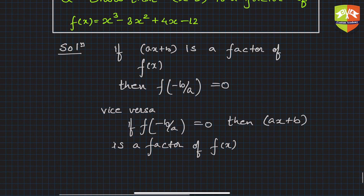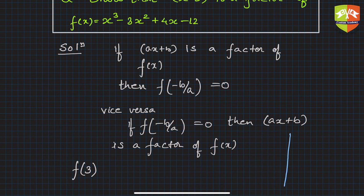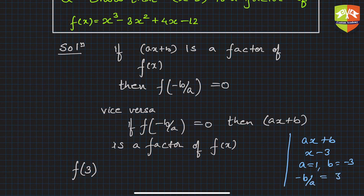Now let's take this particular example. It says check whether (x - 3) is a factor, so let's check f(3). Why f(3)? Your (ax + b) is (x - 3) in this case, so clearly a = 1 and b = -3. So -b/a, which is required here, is 3. You have to check f(3).